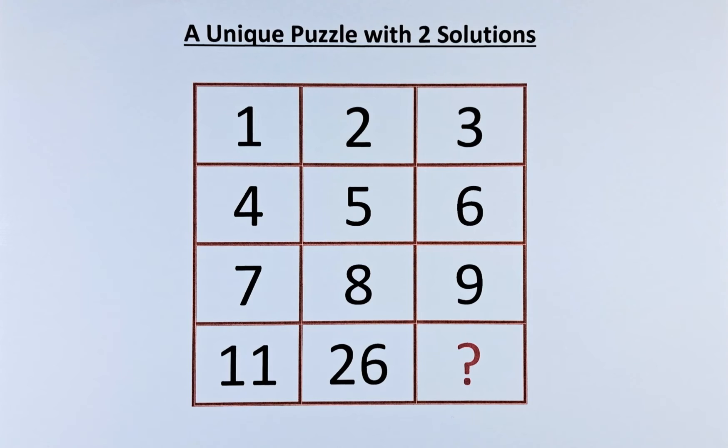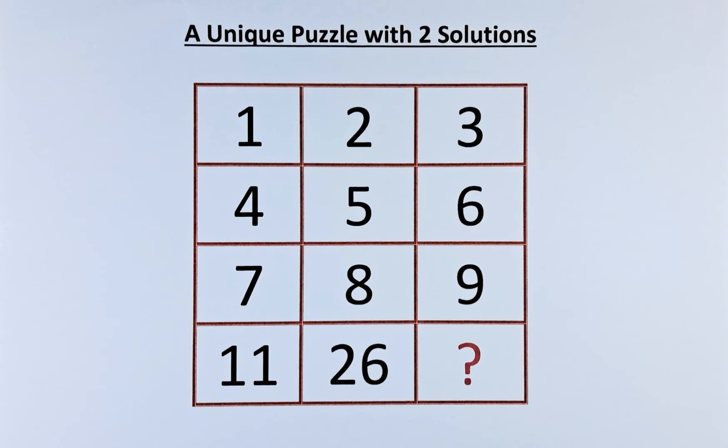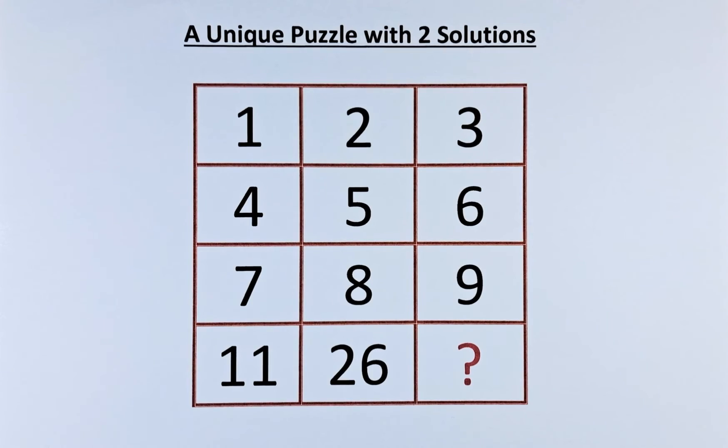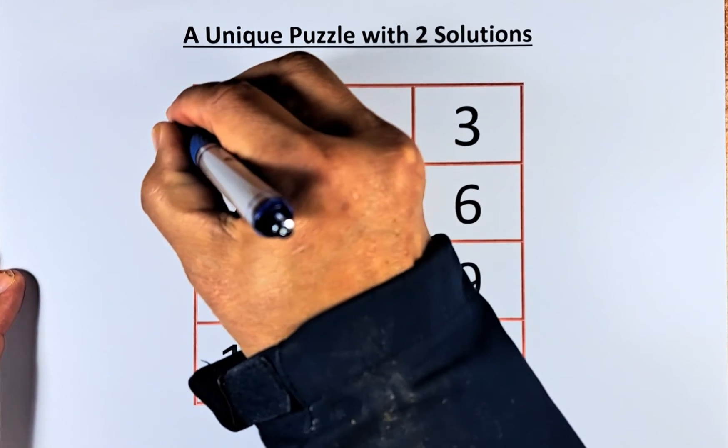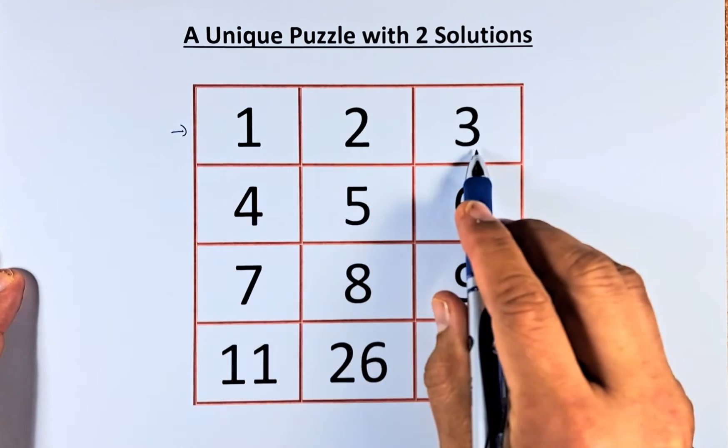So the two solutions are working one in the column and the other one in terms of row. So we're going to start with the rows. To get the rows, it's very simple.